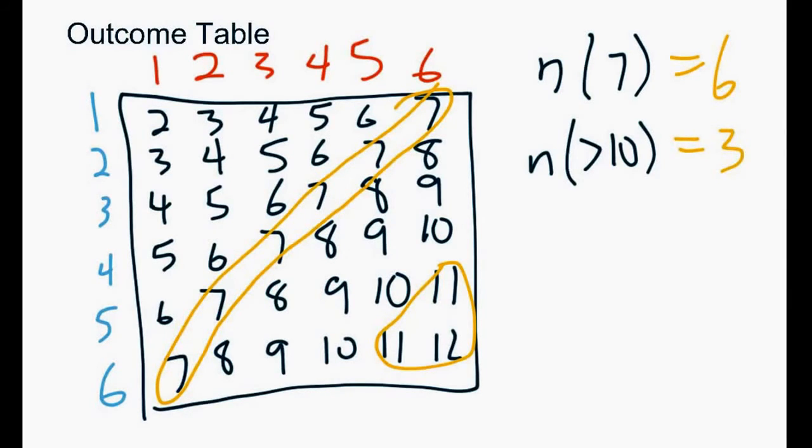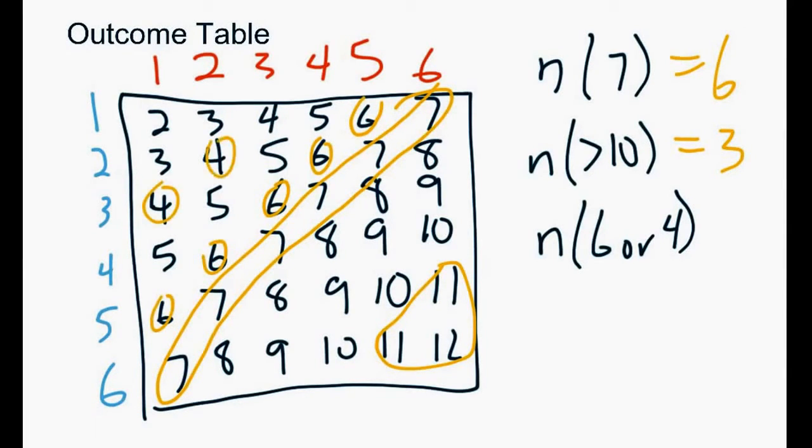What's the number of ways we could roll a six or a four? So in this case, you'd have all your sixes, so we've got one, two, three, four, five sixes, and three fours. Remember, or means plus, so five sixes and three fours would give us five plus three is eight.